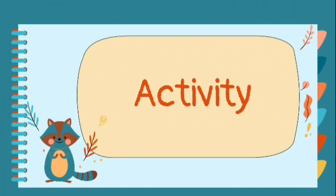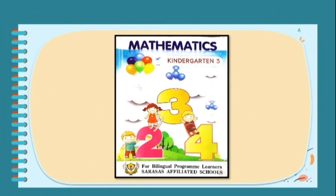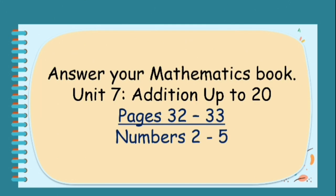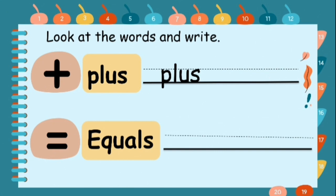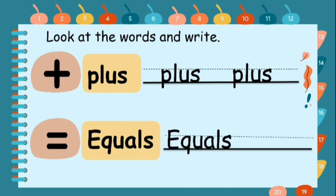Activity. Students, answer your mathematics book, Unit 7, Addition up to 20, pages 32 to 33, numbers two to five. Look at the words and write. For example, the first one here is 'plus'. Students, take your pencil and write the word: P-L-U-S, plus. Next is 'equals': E-Q-U-A-L-S.